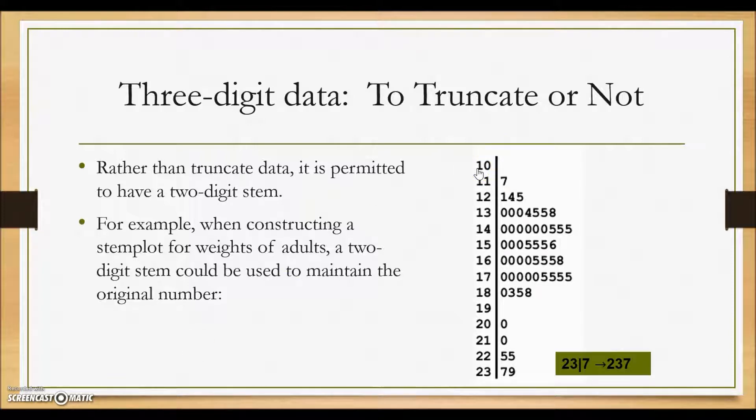So we have stem values of 10 through 23, and the key here indicates that a 23 line leaf of 7 was created from the original 237.